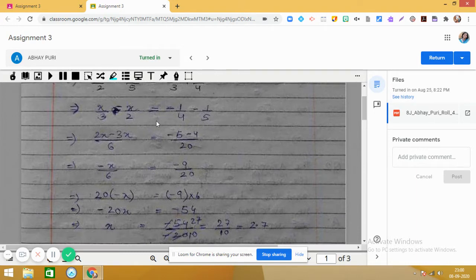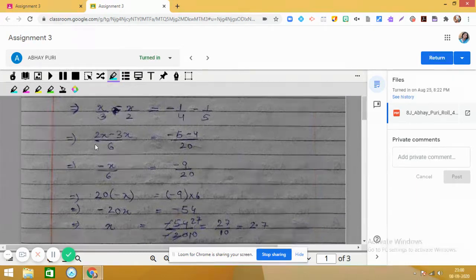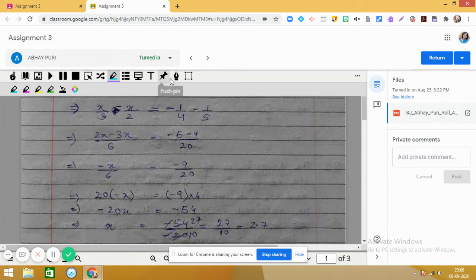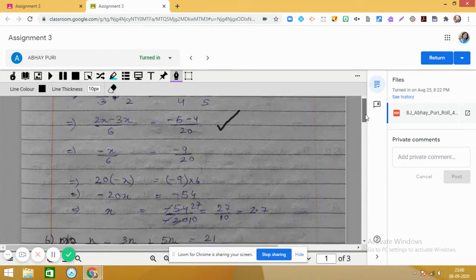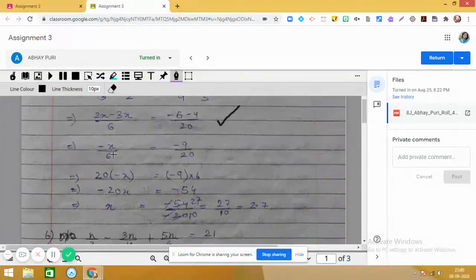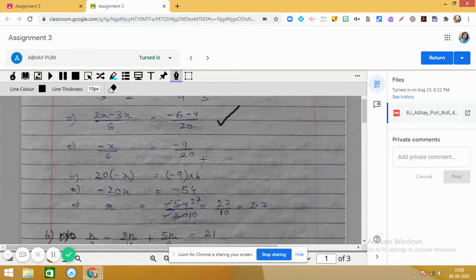Now on the left side you can take 6 as LCM, as you can see over here, and then you get in the numerator 2x - 3x. So now on the right hand side you can take 20 as LCM, so you get -5 - 4 on the numerator. So 2x - 3x gives you -x and in the denominator it is 6. Here you get -9/20, this is also correct.